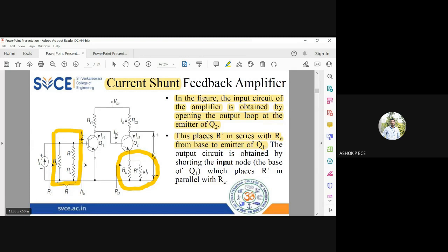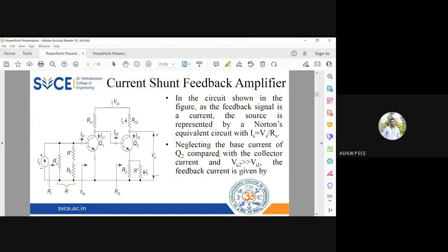Now if I want to see what is going to happen at the output side, the current is going to split, so RE and R dash are going to be in parallel, and whatever current flowing through R dash is your feedback current IF. See the current, how it is flowing, it is flowing in the opposite direction as like your emitter current.